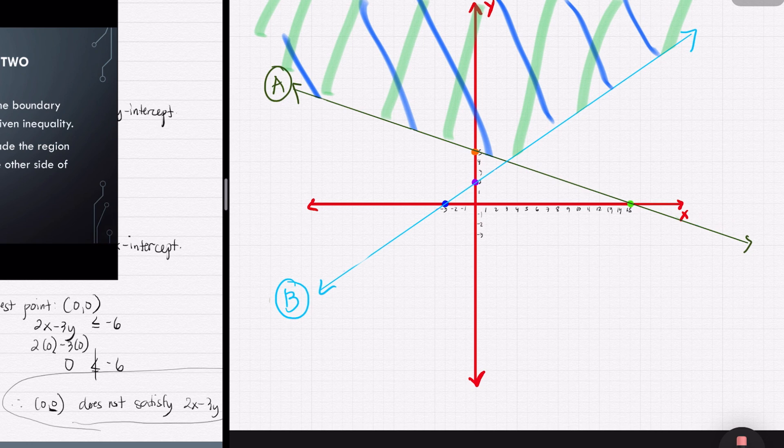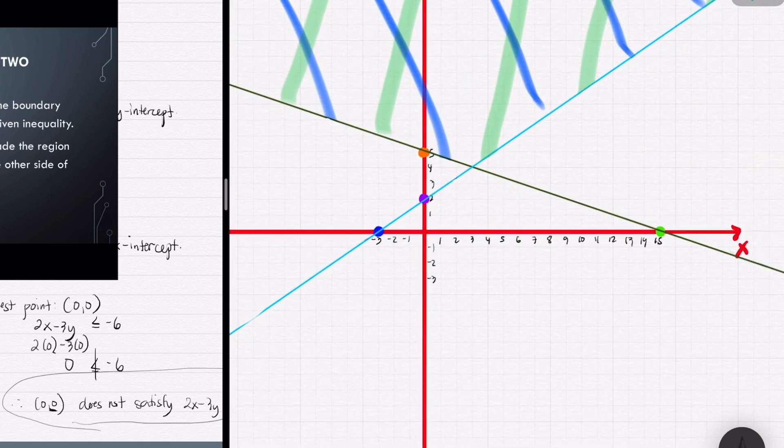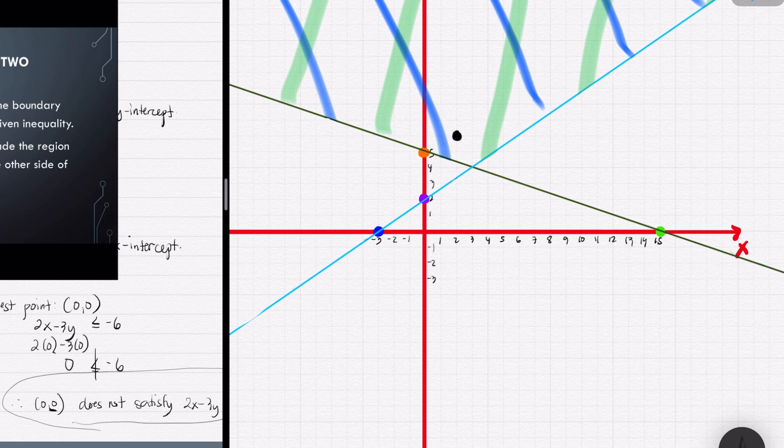Let's verify if this feasible region is correct. That is, if you pick a point, say (2, 6), and this (2, 6) is part of the feasible region, this point should satisfy both of the inequalities.